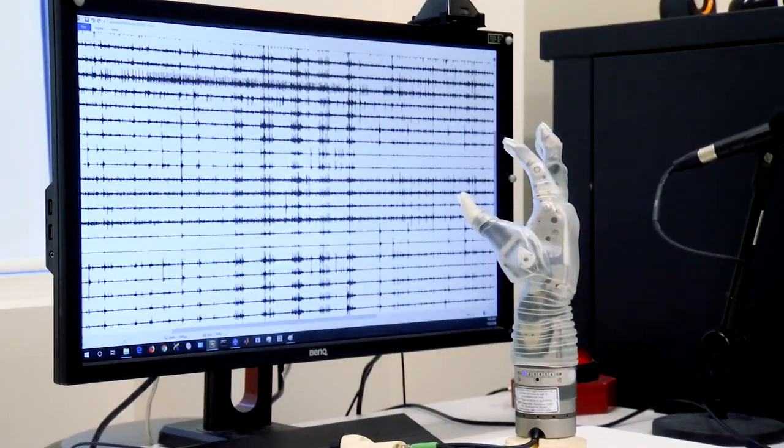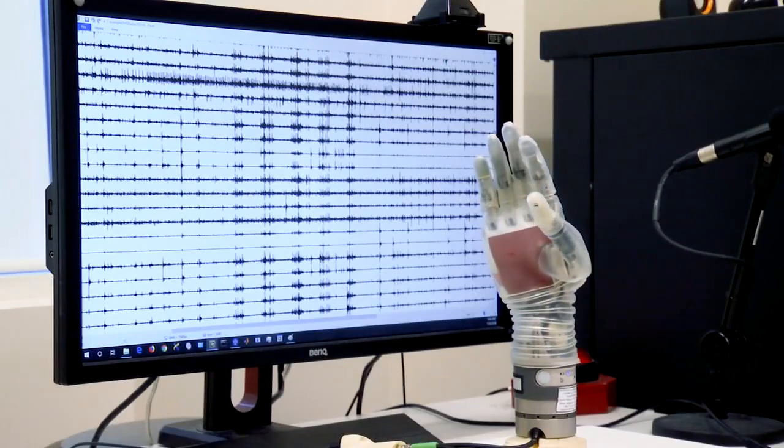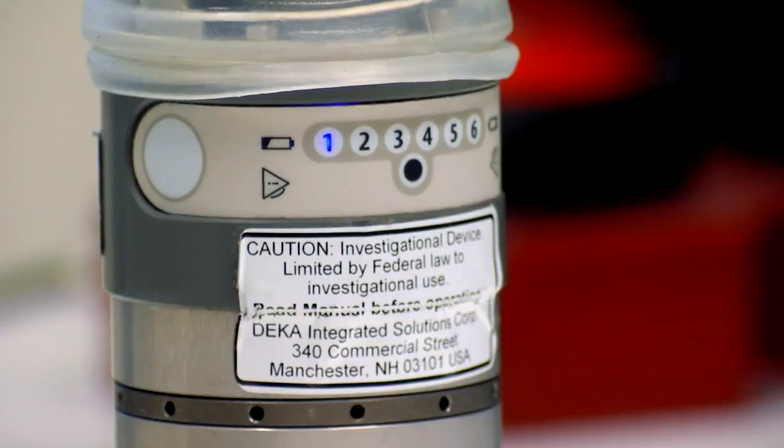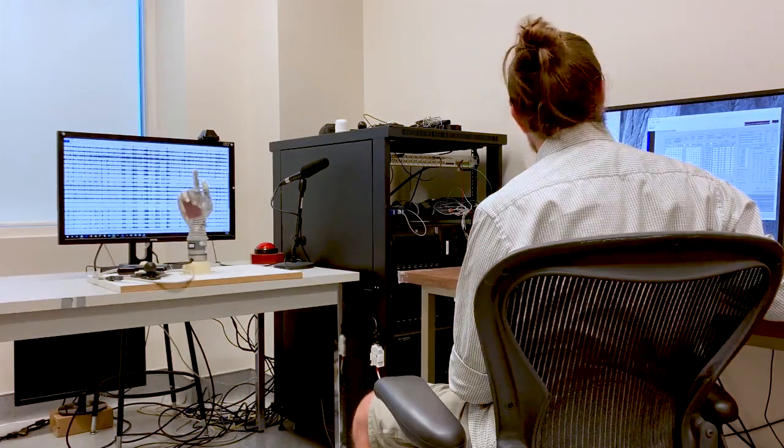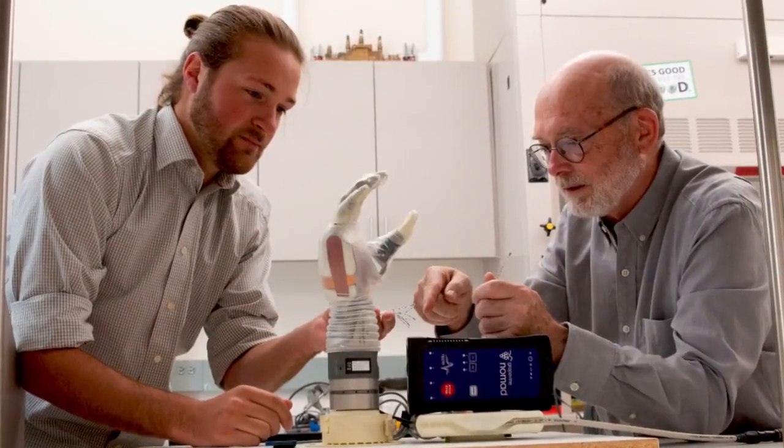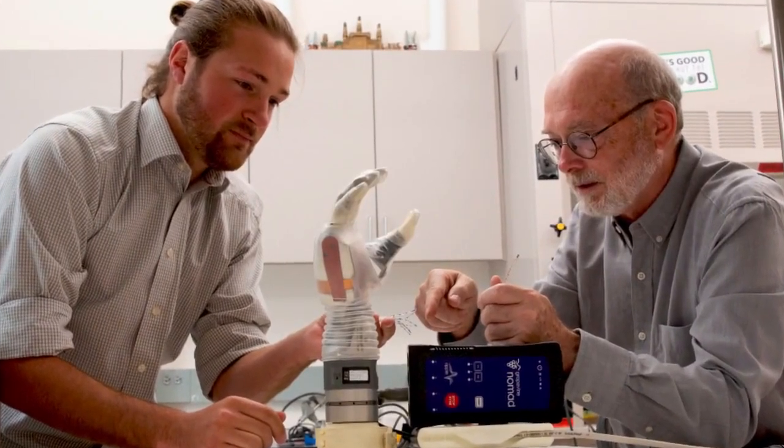And so as a person or an amputee thinks about moving their hand, we would be recording those signals and intuitively providing them with control. The team is waiting for FDA approval on another round of clinical trials, this time where the amputee can wear their Luke arm home.